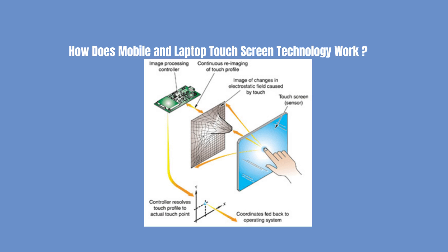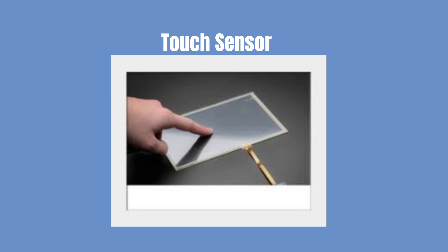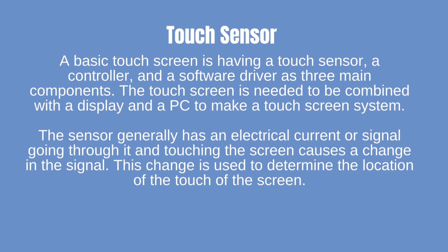How does mobile and laptop touchscreen technology work? Different types of touchscreen technology work in different methods. Some can detect simply one finger at a time and get confused if you seek to push into multiple positions at once. Other types can notice and differentiate more than one key push at once. A basic touchscreen has a touch sensor, a controller, and a software driver as three main components. The sensor generally has an electrical current or signal going through it, and touching the screen causes a change in the signal, which is used to determine the location of touch.